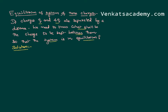It is not one charge that has to be in equilibrium — the entire system has to be in equilibrium. Let us try to solve. There is a point charge q and another point charge 4q. Now I have to keep a third charge; I don't know what its value is, let me call it capital Q, such that the entire system has to be in equilibrium.